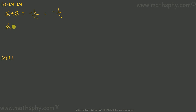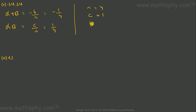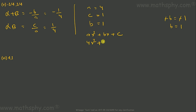Next: alpha plus beta equals negative b over a equals negative 1/4, and alpha times beta equals c over a equals 1/4. Taking a=4, c=1, and negative b equals negative 1 so b equals 1. The quadratic polynomial is 4x² plus x plus 1.